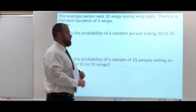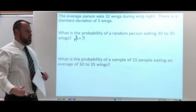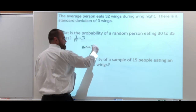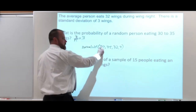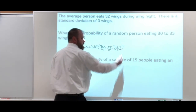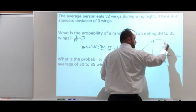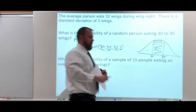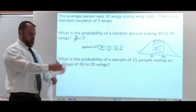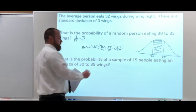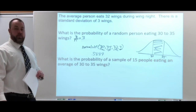If it's just a single person, we don't have to do anything to our standard deviation. If you think about the formula, three divided by the square root of one just gives you three again, so there's no reason to do any calculations. Using normal CDF, we put in our lower bound of 30 and upper bound of 35, our average of 32, and a standard deviation of three. Plugging that in gives us a proportion of 0.5889 — almost 60% — to get a single person eating between 30 and 35 wings.